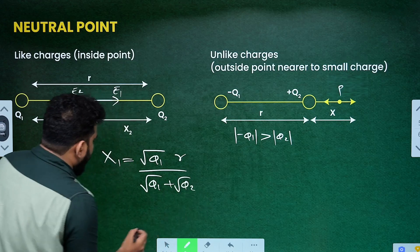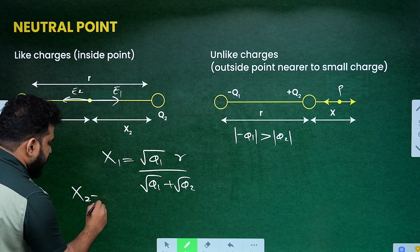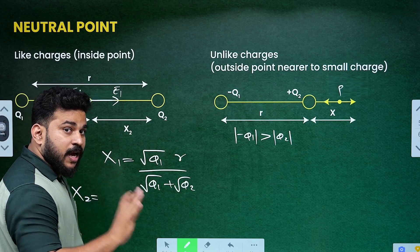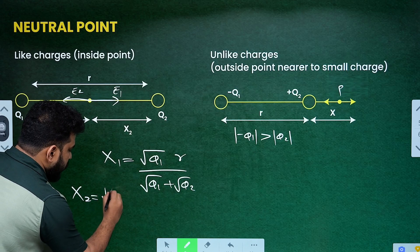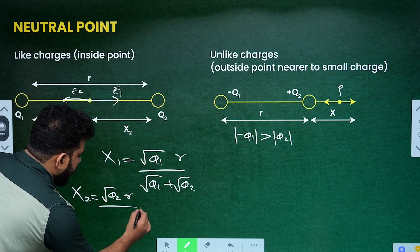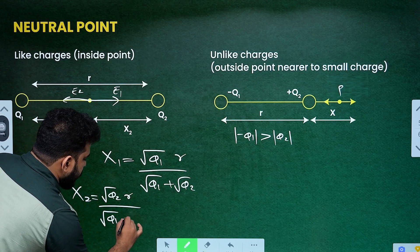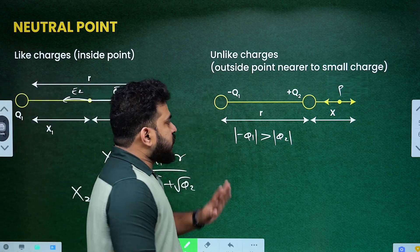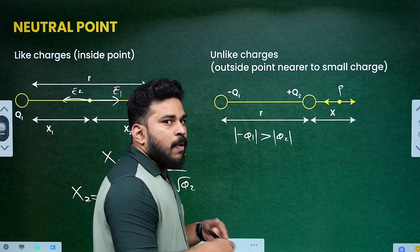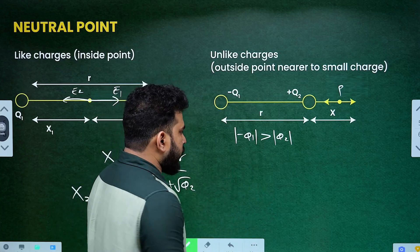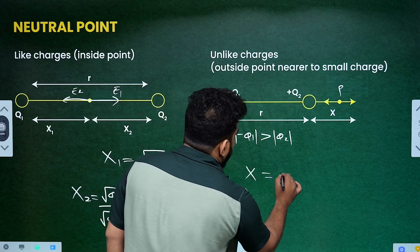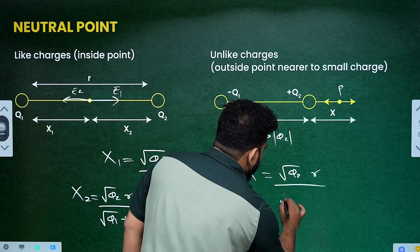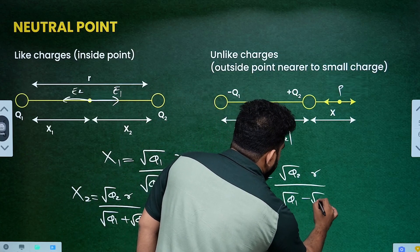What is X2? You can see the same relation for point of equilibrium for the third charge. The condition: X2 equals root Q2 times R divided by root Q1 plus root Q2 for unlike charges between them. For outside, X equals root Q2 times R divided by root Q1 minus root Q2. Magnitude values are used.